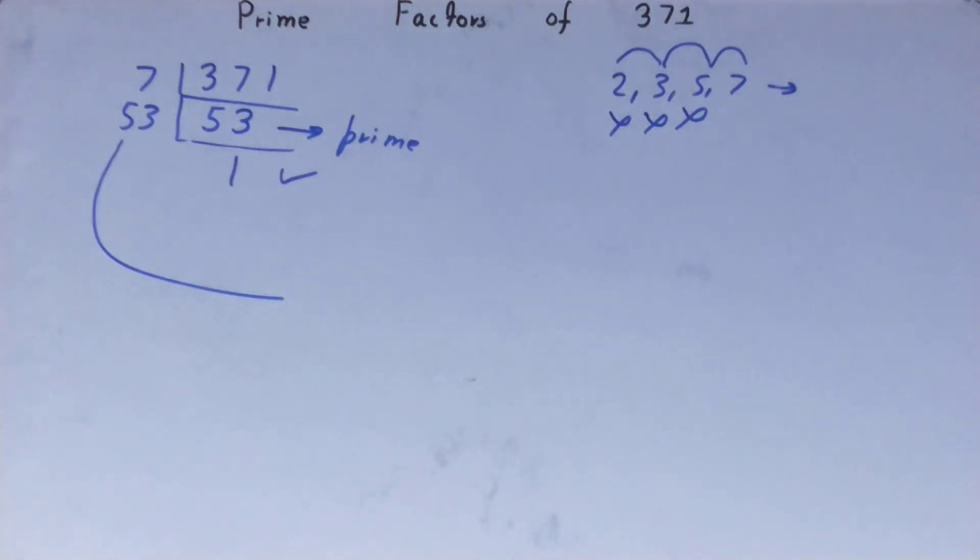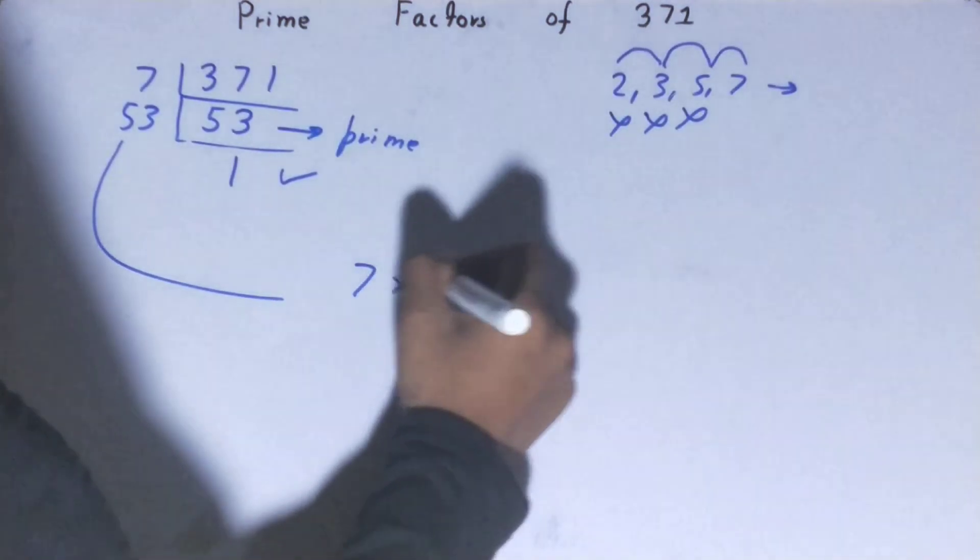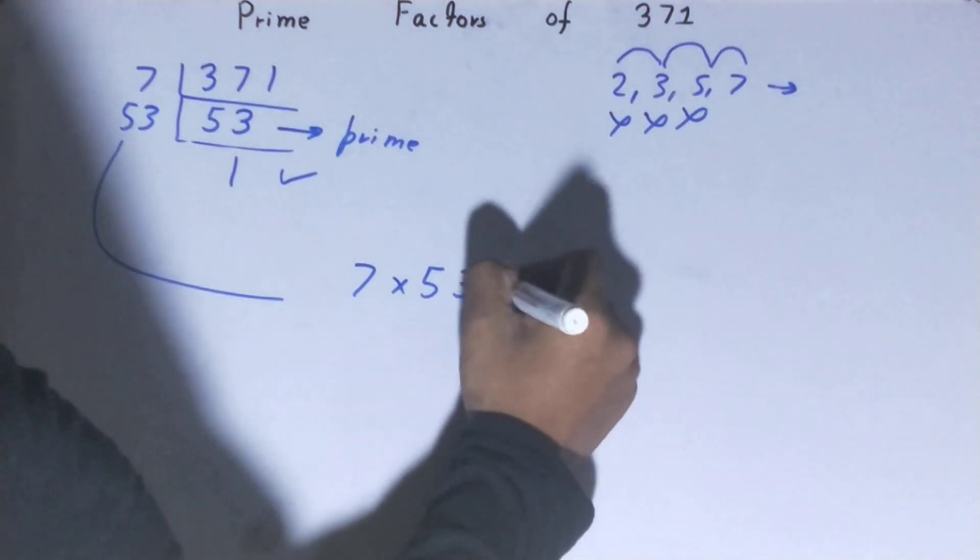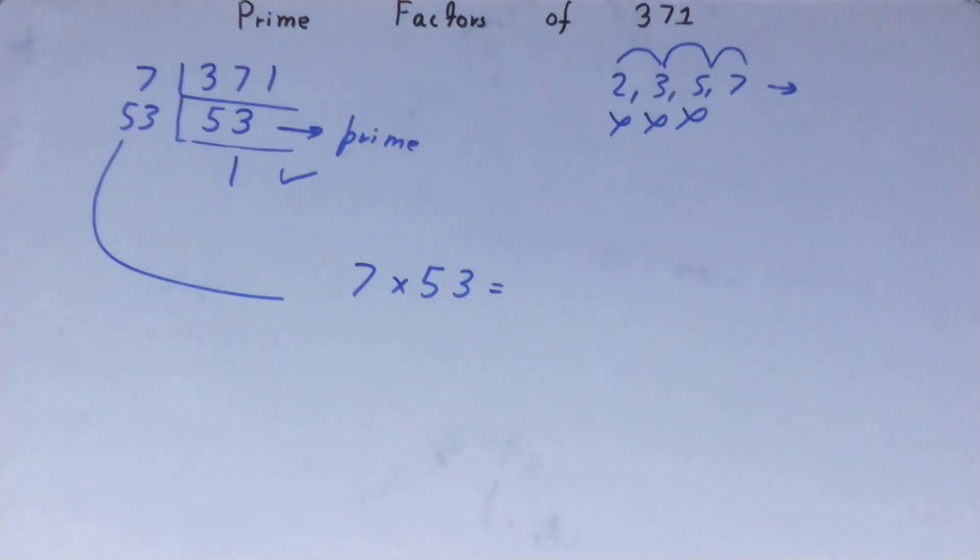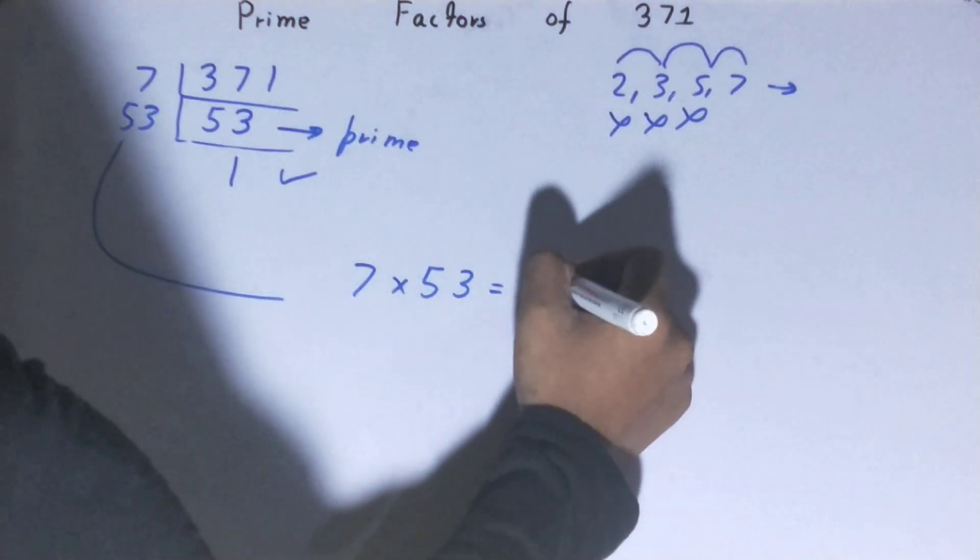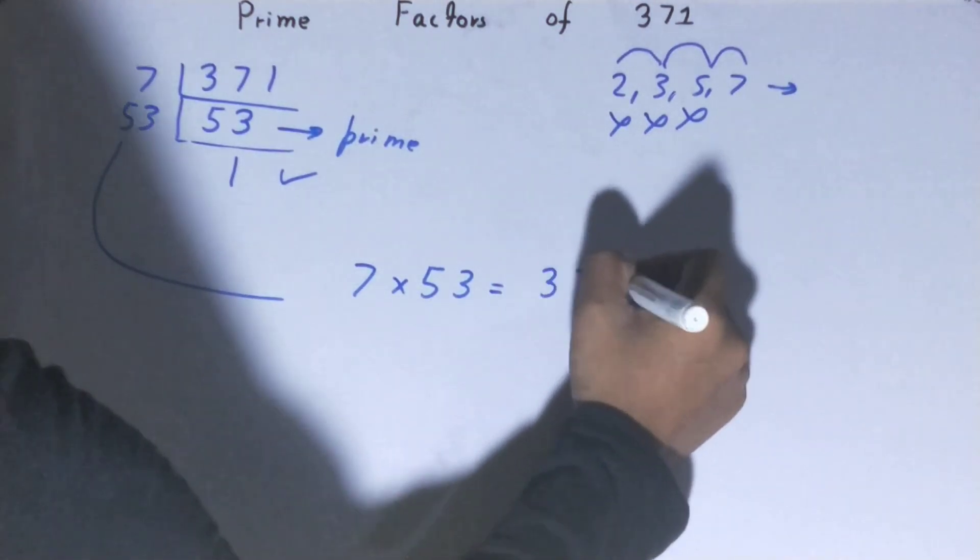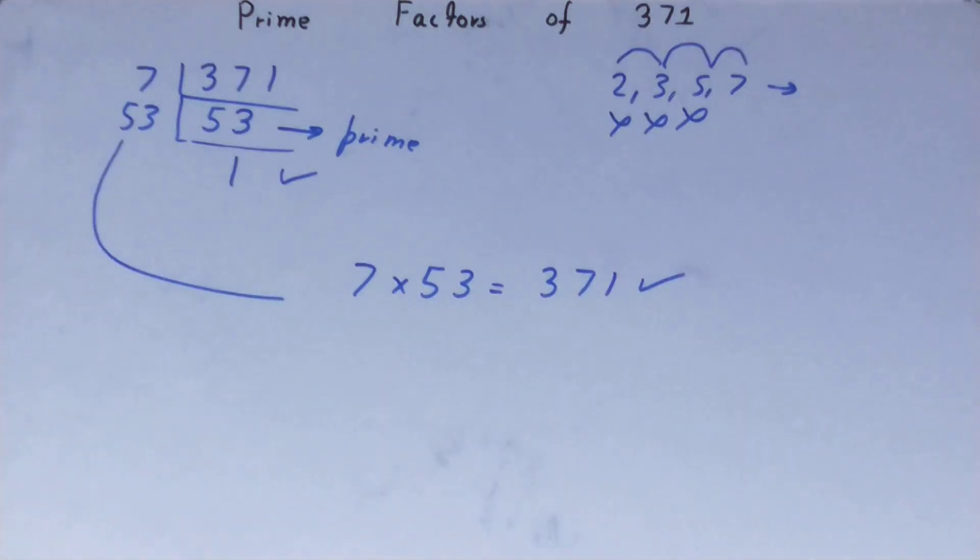Whatever you have on the left-hand side will be the set of prime factors for the number 371, that is 7 × 53. If you want to check whether it is right or not, you can multiply them, and if on multiplying you have the number back again, that means your calculation is fully correct. If not, you need to recheck. So this was all about prime factors of the number 371.